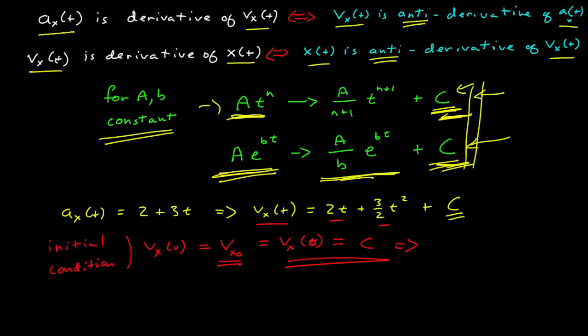So in fact, this constant c has physical meaning. It represents the velocity of the object at t is equal to 0.